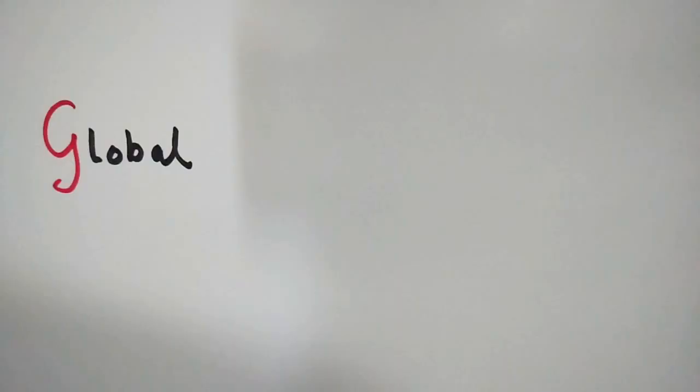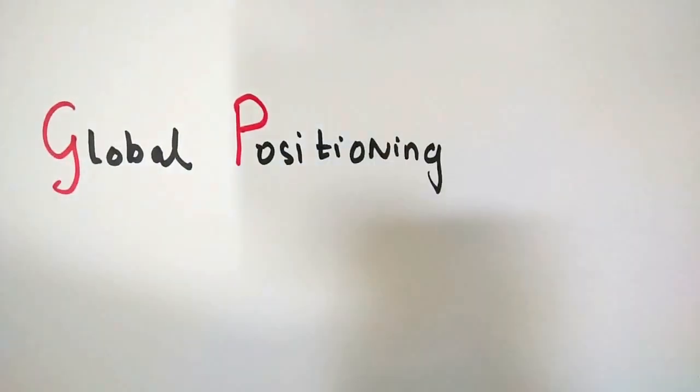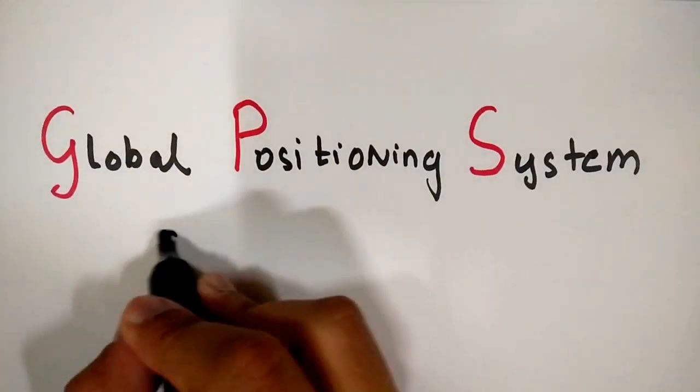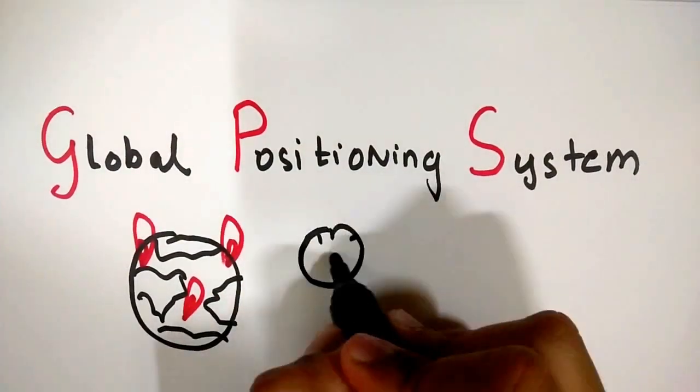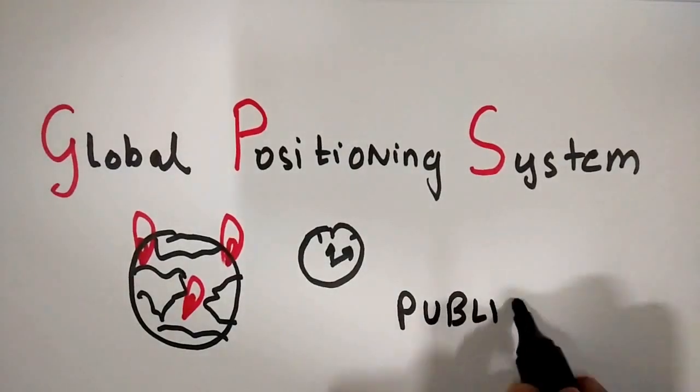GPS or Global Positioning System. It can locate you anywhere in the world and at any time. Initially, GPS was used by the US military to locate their soldiers until it became freely available to the public in the year 2000.